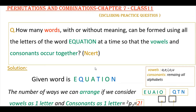In the word EQUATION, first let's identify the vowels. E, U, A, I, O are vowels, because we know that A, E, I, O, U are vowels. The remaining letters Q, T, N are consonants.